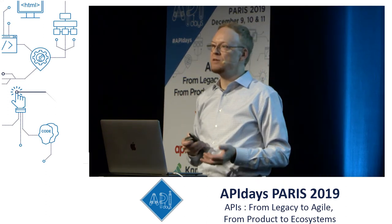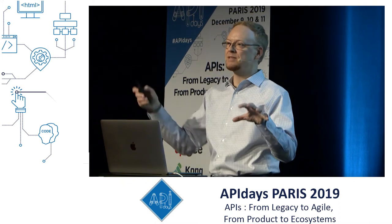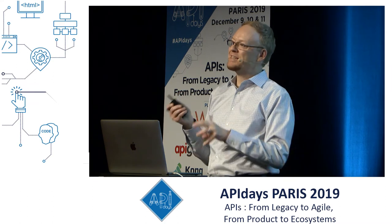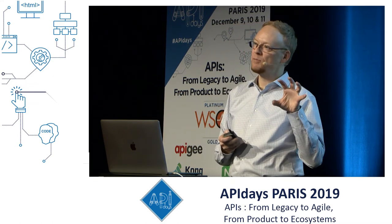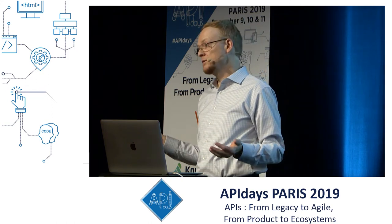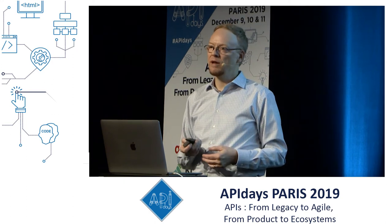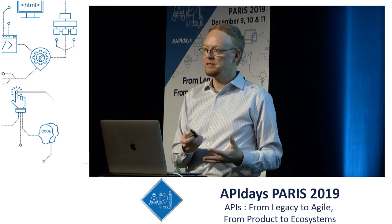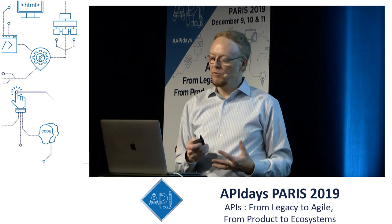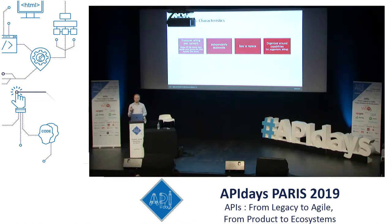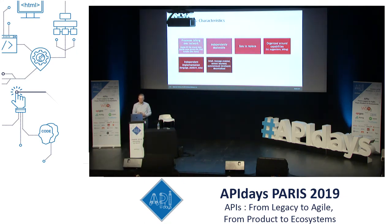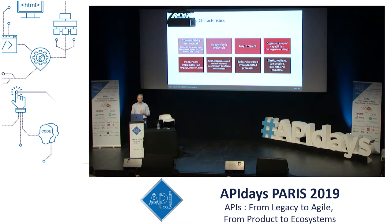Unlike a monolith where all functionality is in one application and you have to scale the entire app, with microservices each little piece can run in a Docker container and you can scale up just the microservices you need — much more efficient use of resources. Some characteristics: usually processes talking over the network, independently deployable, easy to replace, focused around small specific business requirements, developed independently with different languages, platforms, and data stores. Typically async message bounded, fully automated, elastic, resilient, composable, minimal, complete.